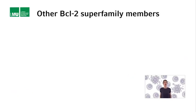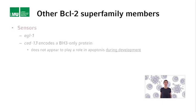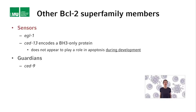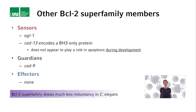Apart from SET9 and EGO1, are there additional members of the BCL2 superfamily encoded in the C. elegans genome? There is one more BH3-only protein called SET13, but it does not appear to play a role in apoptosis during development. However, it turns out that there are no additional guardians, and there also does not appear to be an effector. So in C. elegans, the BCL2 superfamily shows much less redundancy, and this is one of the reasons why it was possible to identify members of the superfamily in C. elegans using forward genetic screens.